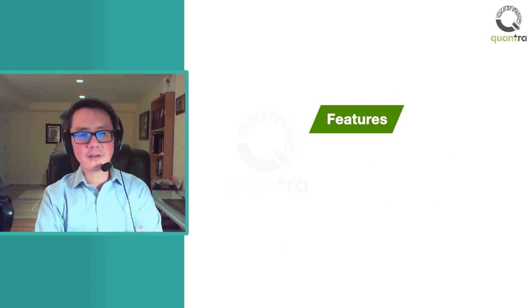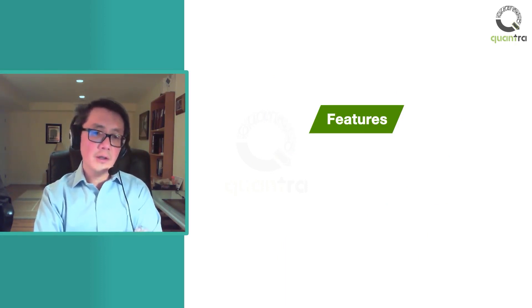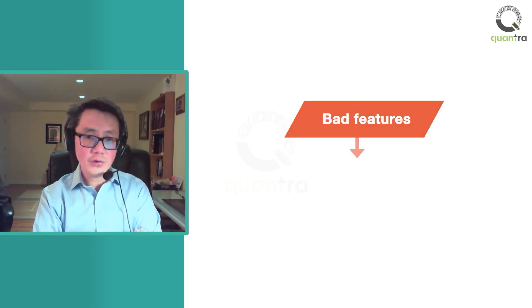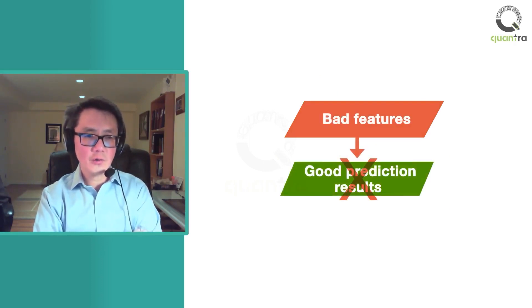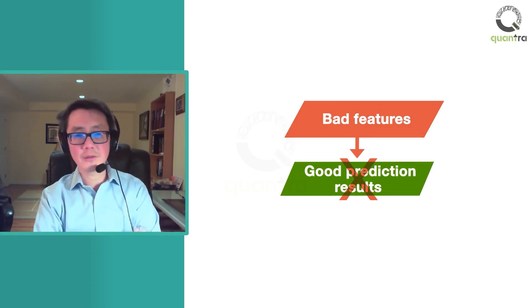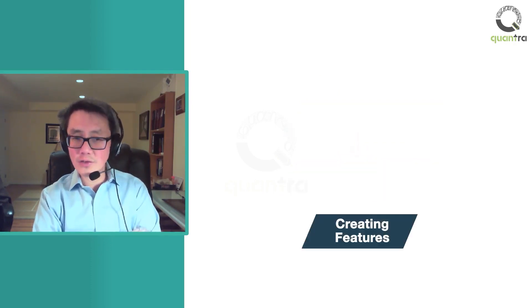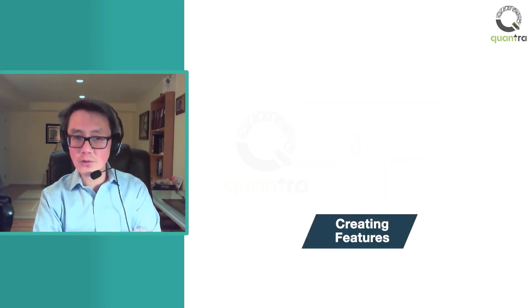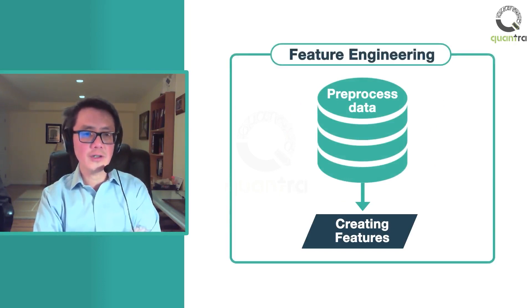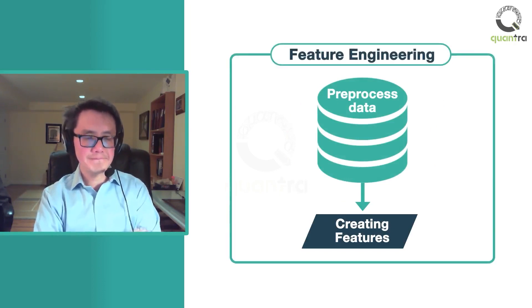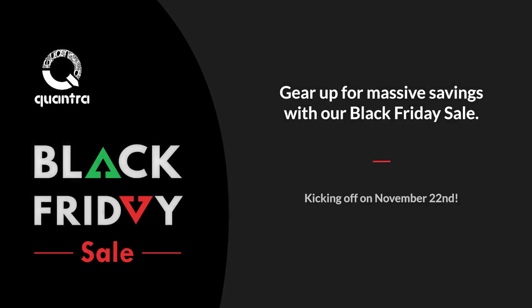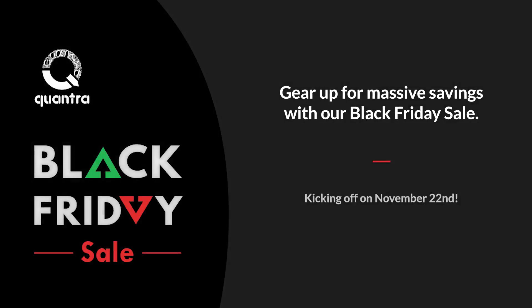The features should represent the factors which affect the prediction outcomes. If you create bad features, you won't get good prediction results no matter how great your machine learning algorithm is. The process of creating features using the pre-processed data is called feature engineering.